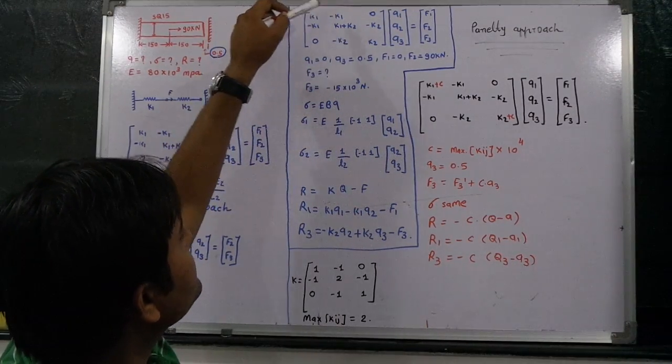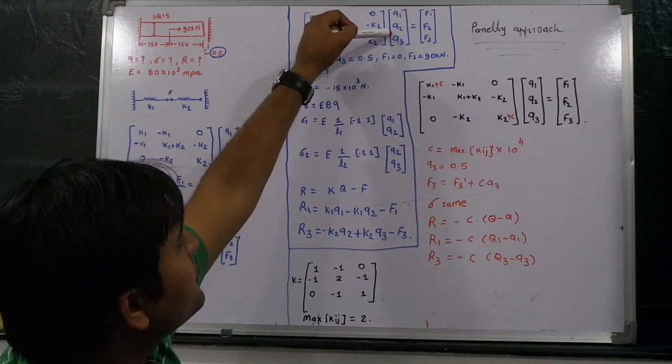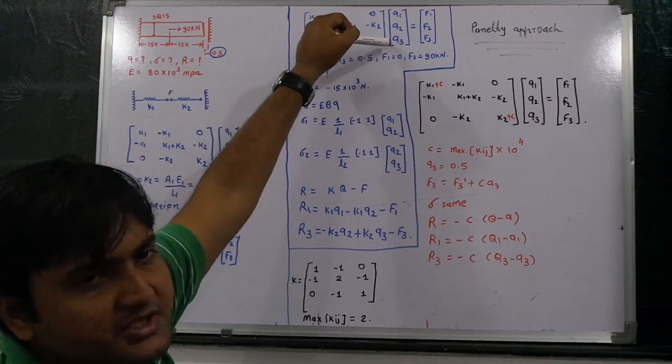K1, K2 are known, so this matrix is known. Q1 is equal to 0, Q2 we need to find out, Q3 value is equal to 0.5.